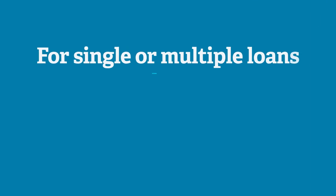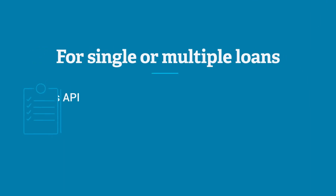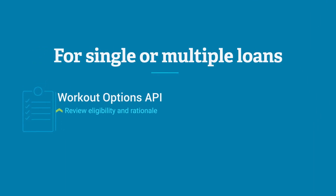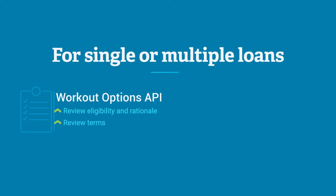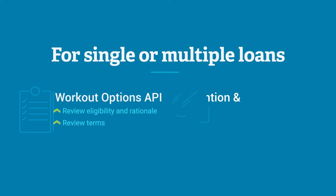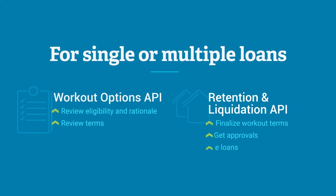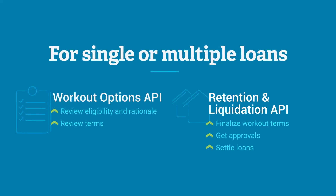Here's how it works. Start with the Workout Options API for a comprehensive assessment of borrower eligibility. Then, settle loans by using the Retention and Liquidation APIs.